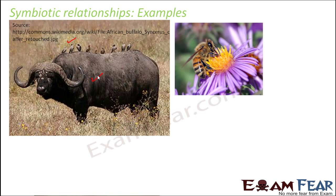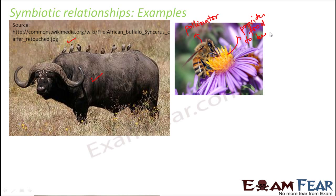Another example — a flowering plant and the pollinator, that is the bee. The bee acts as a pollinator because it helps in the process of pollination for the flowering plant, and the plant provides nutrition and food to the bee. So again, both of them are being benefited.